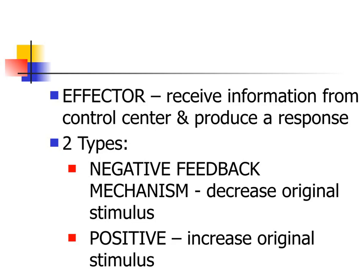Positive feedback is when there is too much of something, yet you tell the body to produce even more. The only example of positive feedback is when a mother is in labor delivering a baby — contractions occur to squeeze the baby out and there is a lot of pressure in the uterus. Instead of slowing the contractions down, the body actually tells the uterus to contract more and more in order to squeeze the baby out.